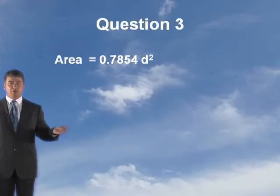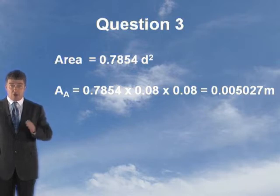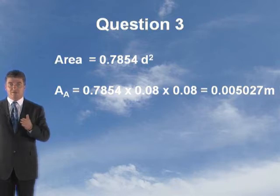Now we need to work out the velocity using V equals Q/A. So we need to work out the area. We've got the diameter in millimetres, we need to work out the area in metres squared. To determine the area at point A, we'll use the formula again, 0.7854d squared. Substituting, you get the area at A equals 0.7854 times 0.08 times 0.08, because it's 80 mil, equals 0.005027. That's in metres squared.